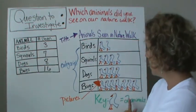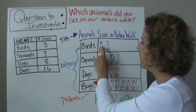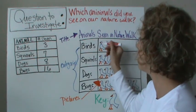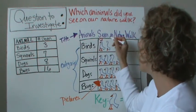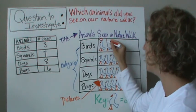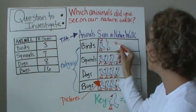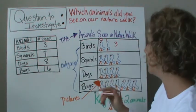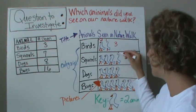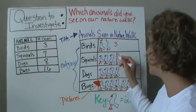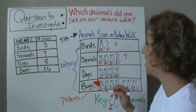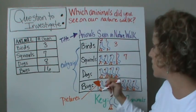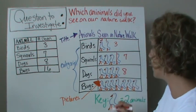We have three birds, and each picture is worth two, so we count by twos: two, and then I have a half of a bird. Half of two is one, so that gives us three. For the squirrels, I said I saw seven: two, four, six, and there's the half again — that's seven. And then for dogs, I said I saw eight: two, four, six, eight. Good.